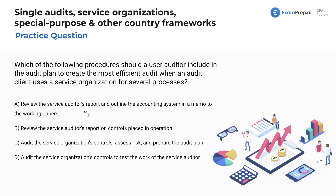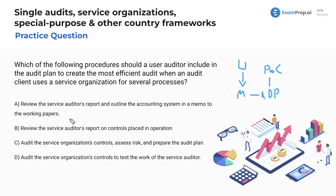Let's review the choices. First: review the service auditor's report and outline the accounting system in a memo to the working papers. We are the user auditor — say we're auditing Microsoft, Microsoft uses ADP, and ADP uses PwC as their auditor, making PwC the service auditor. Are we going to review PwC's auditor's report and outline the accounting system in a memo to the working papers?